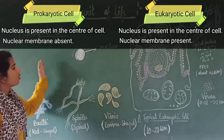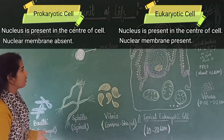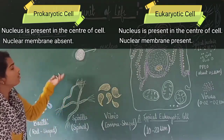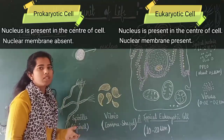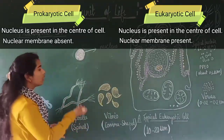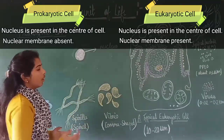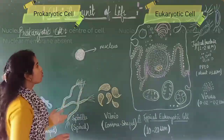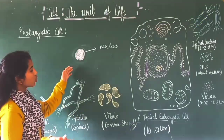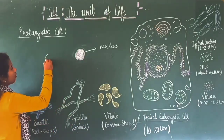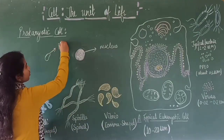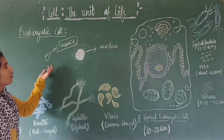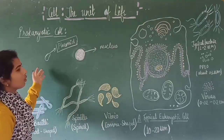Nuclear membrane is absent in prokaryotic cells. Inside the nucleus, a single chromosome is present and some bacteria have circular DNA. Outside the genomic DNA, some bacteria have a small circular DNA which is known as plasmid. This plasmid helps in the transformation of bacteria.